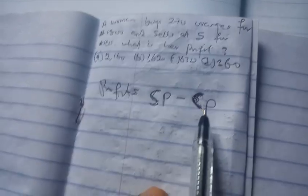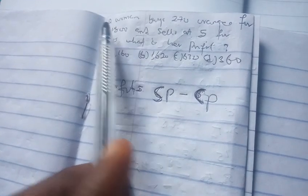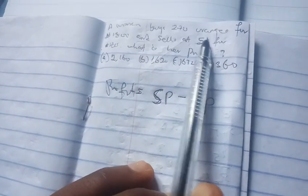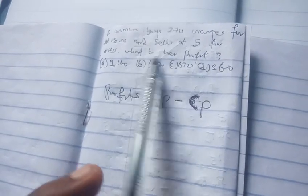This question is very simple but needs careful attention for you to solve it. A woman buys 270 oranges for 1800 naira and sells at 5 for 14 naira. What is the profit?